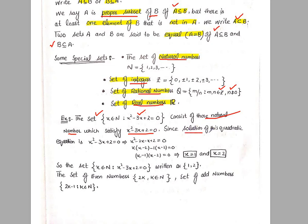Since the solution of this quadratic equation x² − 3x + 2 = 0 — you can apply the quadratic formula or factorize it as x² − 2x − x + 2. Taking x common from the first two terms and −1 common from the next two terms, we get x = 1 and x = 2. These are the elements that belong to natural numbers and satisfy this equation. So the set can be written as {1, 2}.